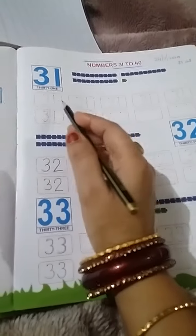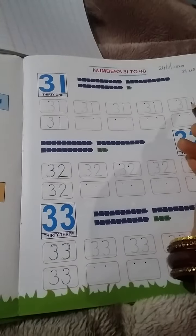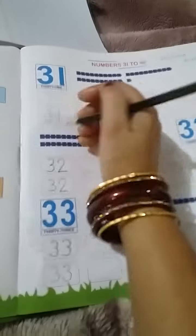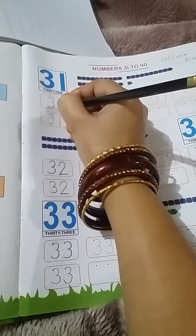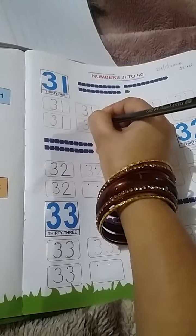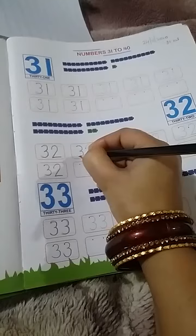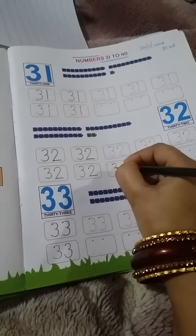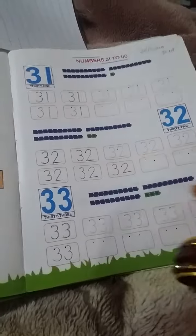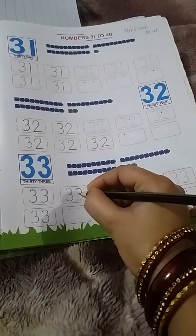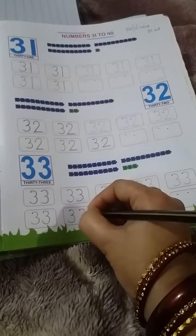First of all, you have to trace these numbers. Then after, you have to write here 31 like 3, 1, 3, 1, 3, 1. Students, 3, 2, 3, 2, 3, 2. And 3, 3, 33, 3, 3, 33.